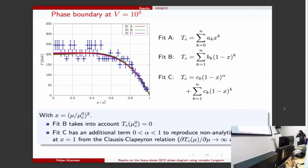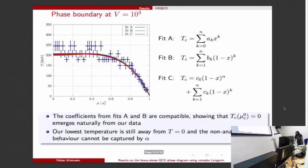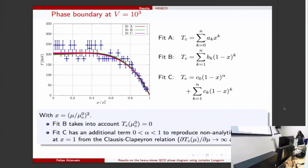The first fit was just a simple polynomial. The second one is a polynomial where we impose that the critical temperature at mu_c is zero. The third one has also the same feature as fit B but also tries to reproduce the non-analytic behavior we expect from thermodynamics around this region.